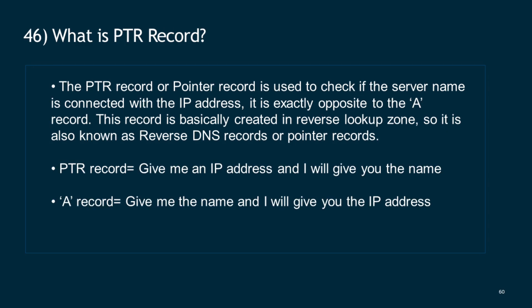Question 46: What is a PTR record? The PTR record, or pointer record, is used to check if the server name is connected with the IP address — it is exactly opposite to the A record. This record is created in a reverse lookup zone, so it is also known as a reverse DNS record or pointer record. PTR record: give me an IP address and I will give you the name. A record: give me the name and I will give you the IP address.